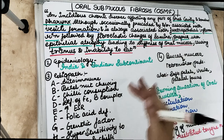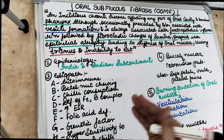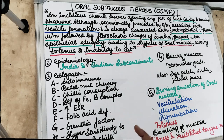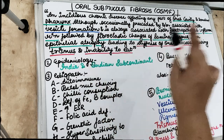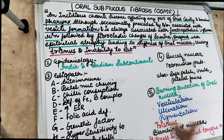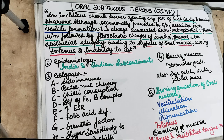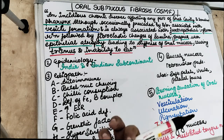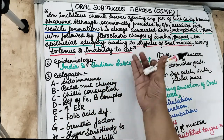There is an inflammatory reaction — juxtaepithelial inflammatory reaction — followed by fibroelastic changes in the lamina propria. So initially there is inflammation and later there are fibroelastic changes. There is fibrosis — as the name suggests — along with epithelial atrophy, leading to stiffness of the oral mucosa. The patient won't be able to open or close the mouth, causing trismus which is the inability to open the mouth, and inability to eat.